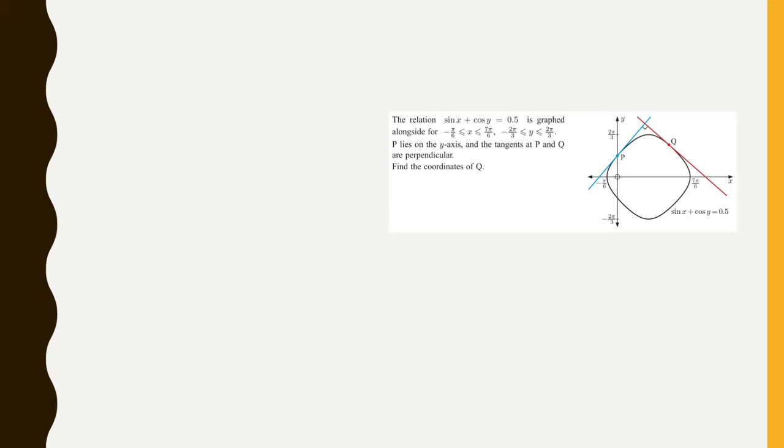So our strategy is to find the point of P. In other words, the coordinates of point P. We know that point P has an x value of zero because it's on the y-axis. And I can figure out what the y value is by plugging into sine of x plus cosine of y equals one-half.